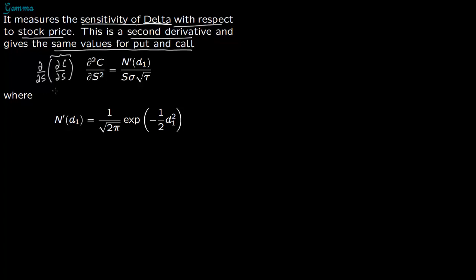You're trying to measure the sensitivity of Delta with respect to changes in the price of the underlying stock, financial instrument, or commodity. So this is nothing but N'(d1) over S times sigma root of tau, where N'(d1) is this expression.